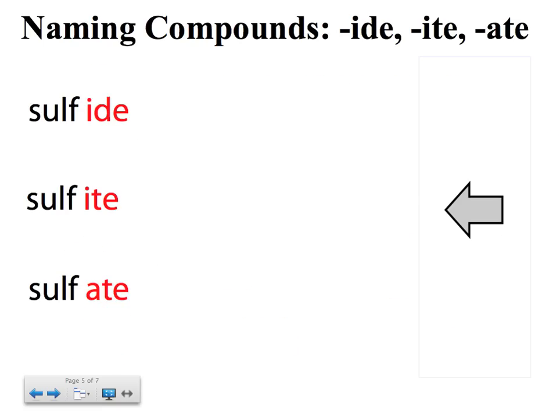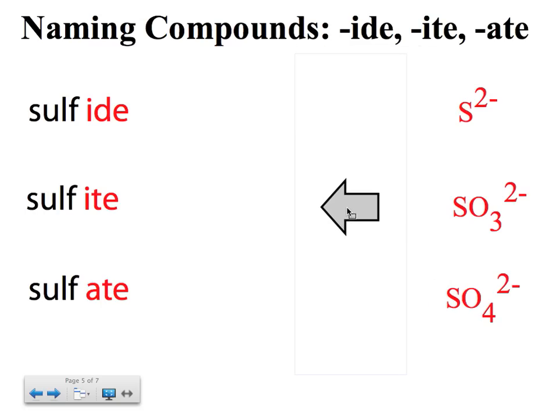So, let's look at this again. Why do I still have here? So, let's just reveal. So, '-ide' sulfur by itself. Sulfite is SO3 2-. Sulfate, SO4 2-.